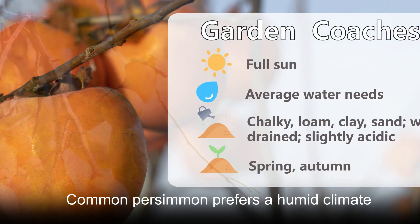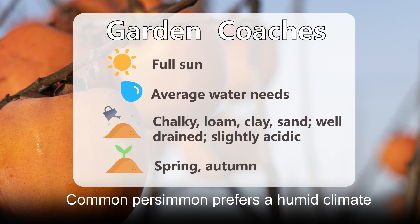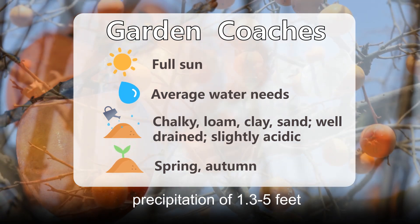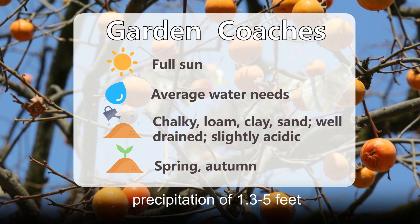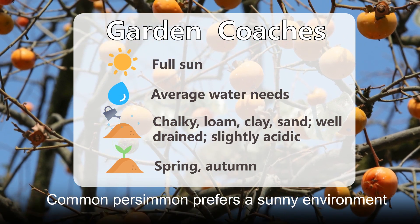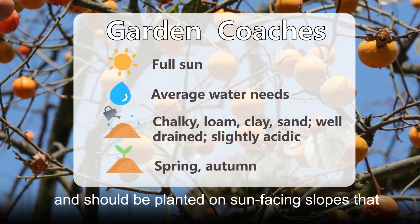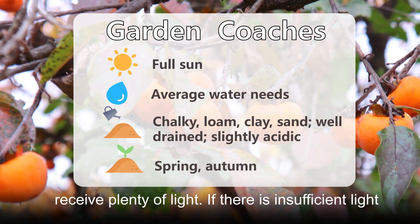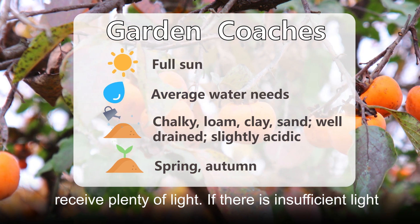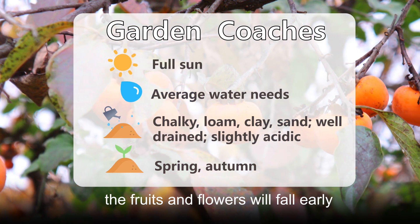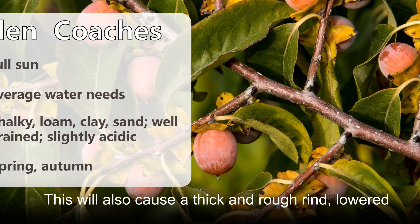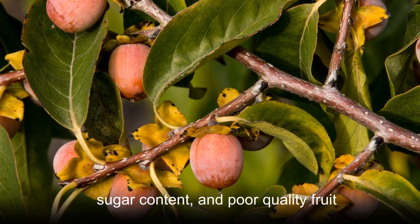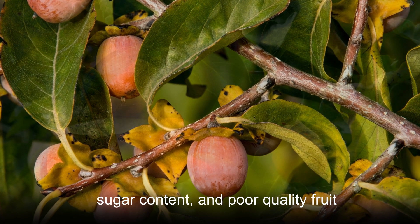Common persimmon prefers a humid climate and can be cultivated in areas with annual precipitation of 1.3 to 5 feet. It prefers a sunny environment and should be planted on sun-facing slopes that receive plenty of light. If there is insufficient light, the fruits and flowers will fall early, causing a thick and rough rind, lowered sugar content, and poor quality fruit.